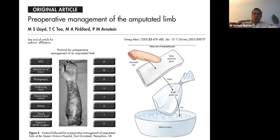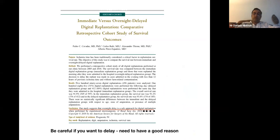There has been discussion in the literature about delaying replantation. A paper by the Chelmsford group and one by Cavadas suggest that delaying until daylight hours is safe with no difference in survival outcomes. However, you must be careful — if a single digit replant comes in at 10pm and takes two to three hours, you don't want to delay eight hours and increase ischemic time, raising the risk of ischemia-reperfusion injury.